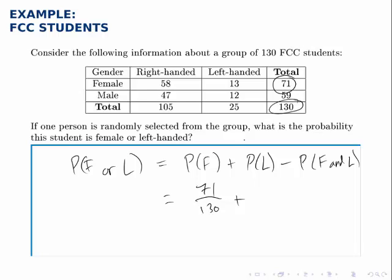The number of ways to select a left-handed student would be 25, since there are 13 female left-handers and 12 male left-handers. The total number of people we're selecting from is 130.